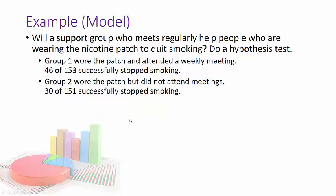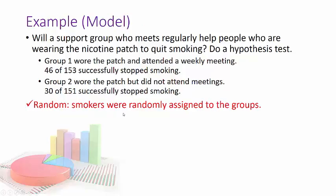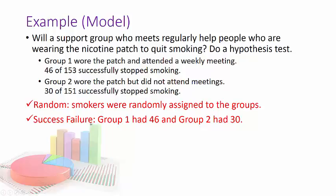So now getting to the model. The model is the same, so we still have to make sure they were random, and they did tell us they were randomly assigned. Group one has 46 successes, and group two had 30. And I could check, you can easily see my failures are more than 10 as well. And it is reasonable to assume these two groups are independent. There's nothing to make me suspicious.